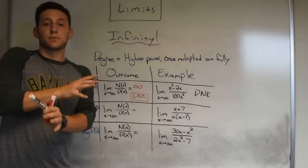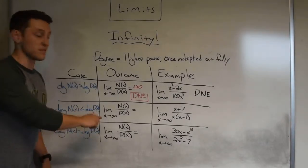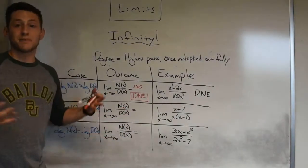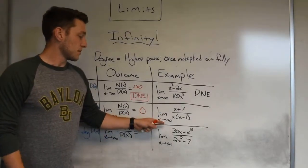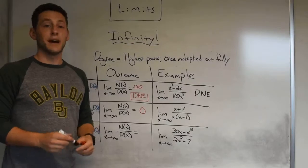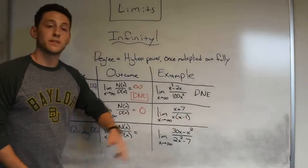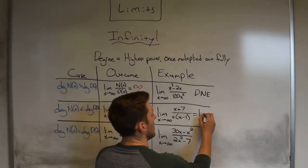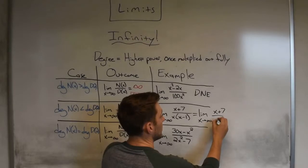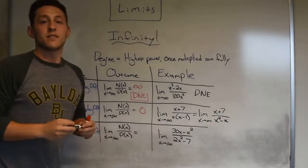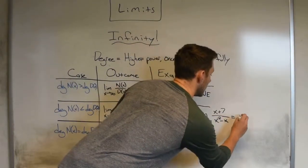Next scenario: what if the degree of the numerator is less than the degree of the denominator? In this case, if the top is smaller than the bottom, the limit as x approaches infinity is just going to be zero. For example, the limit as x approaches infinity of (x + 7) divided by x(x minus 1) — multiply out the bottom to get x squared minus x, so the degree of the bottom is 2 and the degree of the top is 1. The bottom is bigger, which means this limit equals zero.